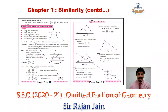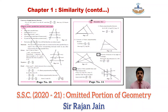Then page number 10 — property of intercepts on three parallel lines — that entire property is omitted. So on page number 10, strike out that entire property. On page number 11, there are two questions based on angle bisector theorem and property of intercepts of three parallel lines — that is question number 3 and question number 4 on page number 11. You can strike those out.